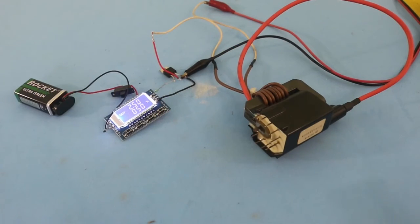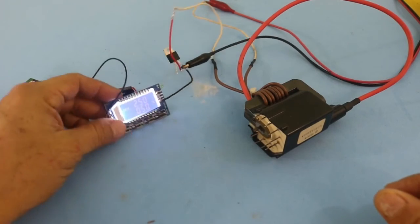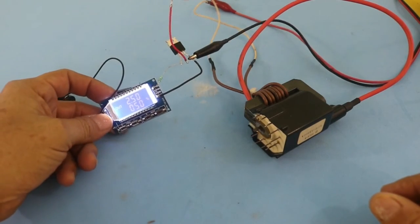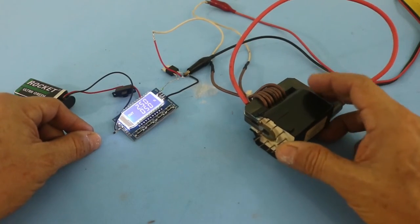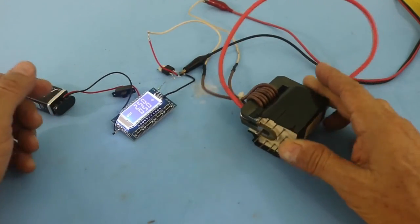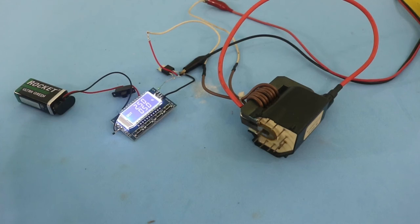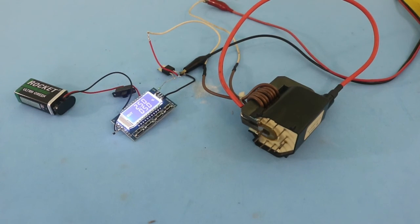Okay, there you have it. You can see that by varying the frequency you can change the output voltage of the flyback. Hope you liked this video, thanks for visiting my channel, and see you in the next one.